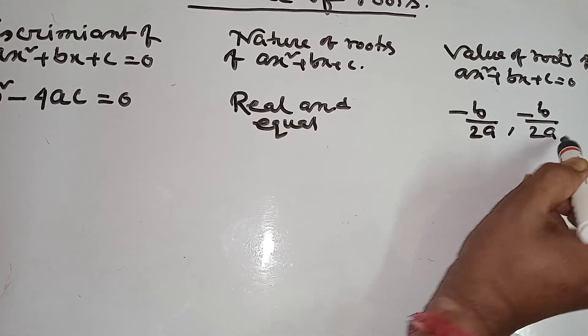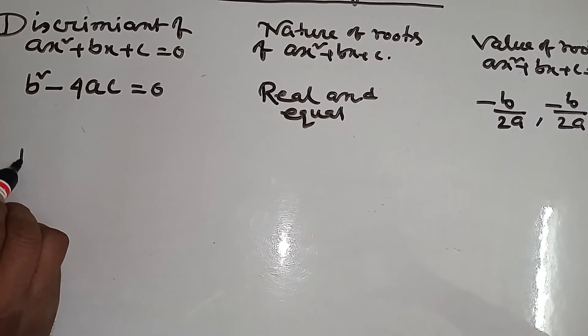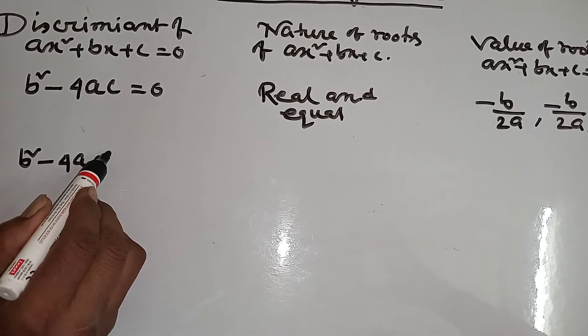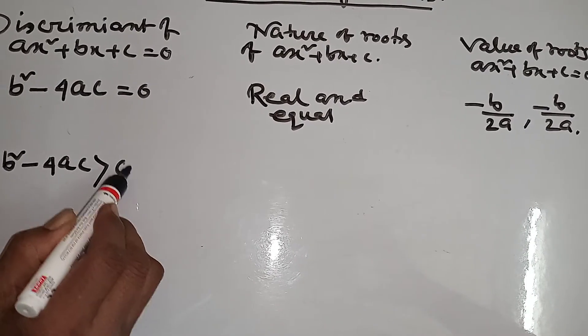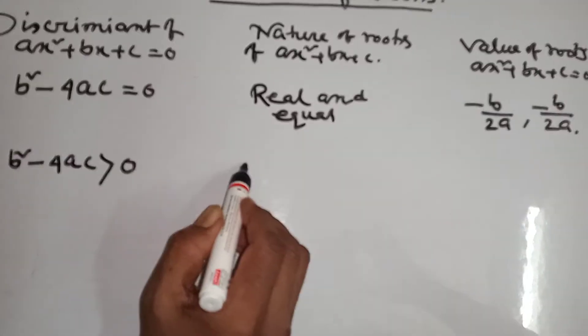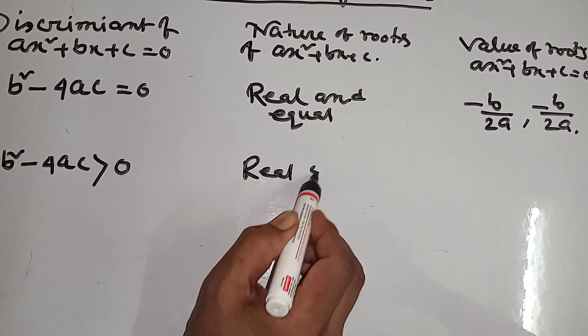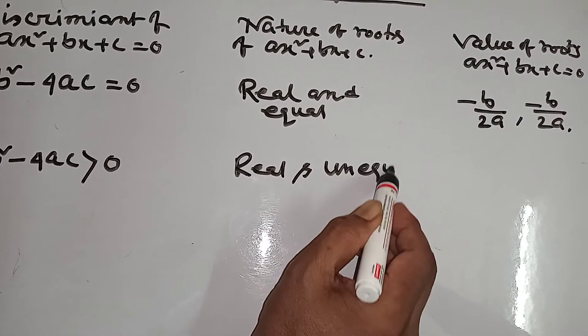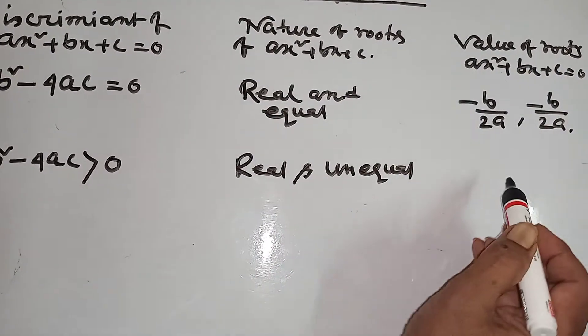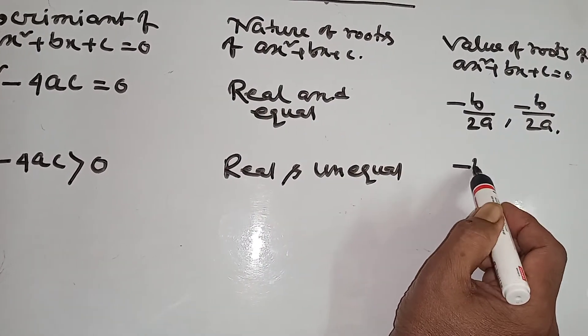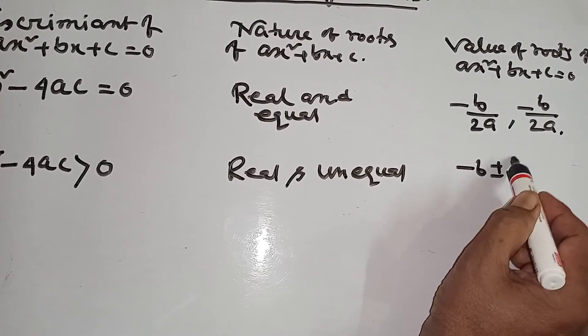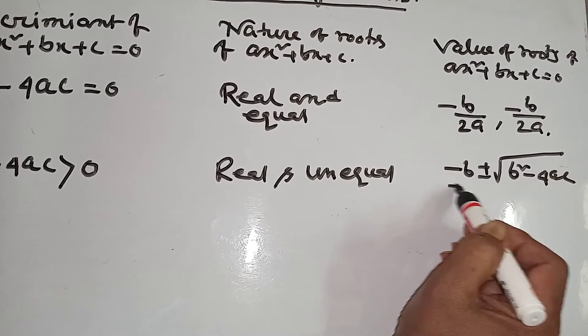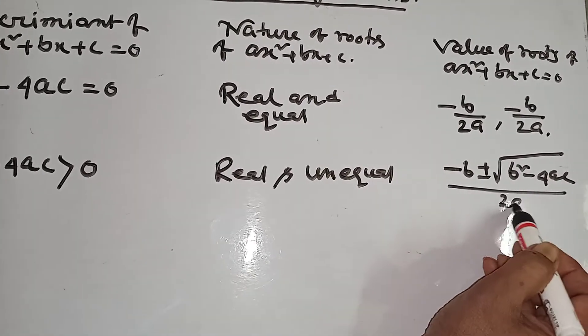Again, if b squared minus 4ac is greater than 0, then roots will be real and unequal. They will be minus b plus or minus root of b squared minus 4ac by 2a.